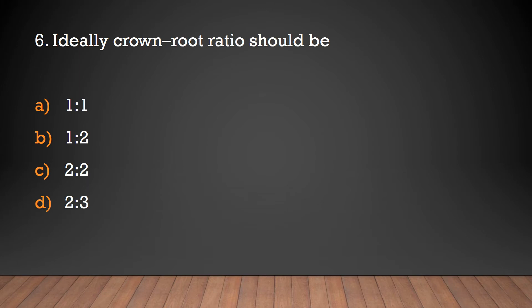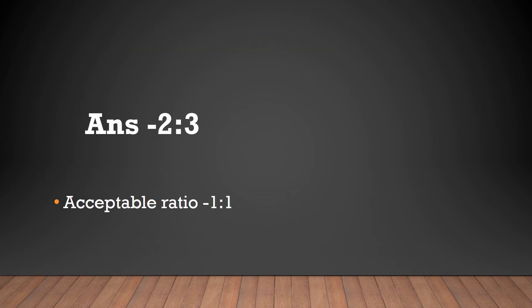Ideally, crown-to-root ratio should be: 1:1, 1:2, 2:2, or 2:3? The answer is 2:3. The ideal crown-to-root ratio is 2:3; the acceptable ratio is 1:1.